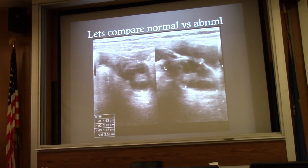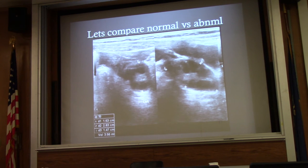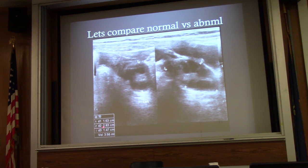Ovarian torsion can occur in pretty much any age group. Here's a case using a linear probe in a small person — an eight-year-old female with abdominal pain. The left ovary measures about one by two by one centimeters with a volume of about 3.56 cubic centimeters. Looking at the right side, it is much larger with the follicles pushed to the periphery and a volume of about 21.1 cubic centimeters.